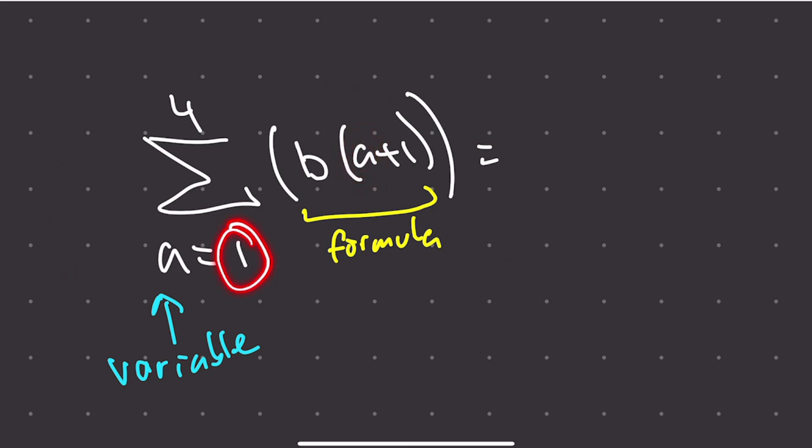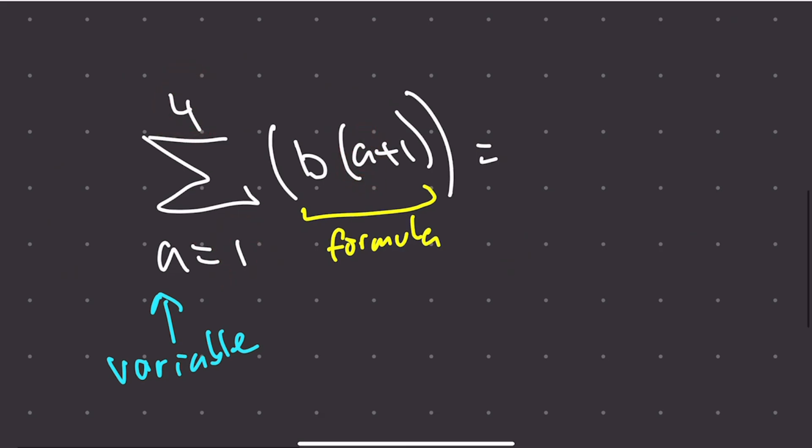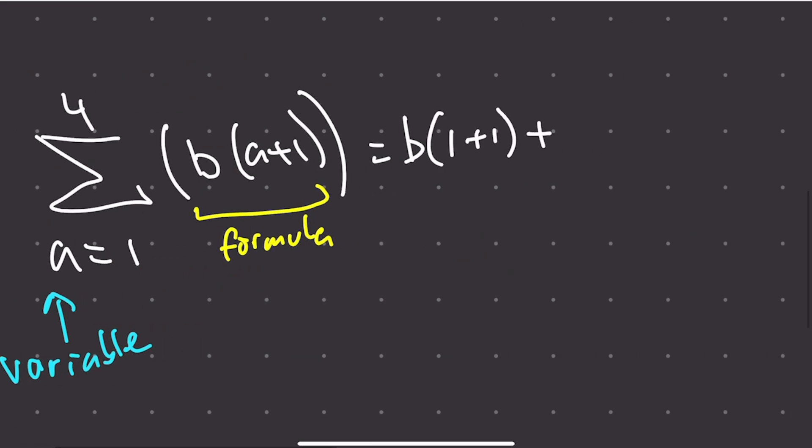The starting number is 1, ending number is 4. So what does that mean? We copy the formula down - B, and then whenever we see A, we sub it in. We sub in the starting number. So we got 1, and then plus 1, and that is the first chunk. And then we need to add. And then again, copy the formula, and whenever we see A, we replace it with the next number.